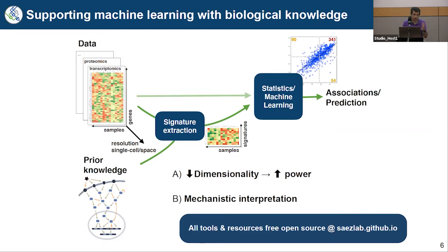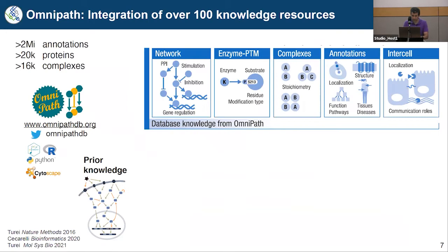All the tools we produce in the lab are free — R or Python packages — and we're always happy when people use them. To get this biological knowledge, there are many good databases and resources. What we did is focus on a type of biological knowledge that is highly curated — the things we know really well — and bring them together under one portal. For this we developed a resource called OmniPath, which includes curated information about which protein can activate which protein, how this happens, complexes, annotations, and localization.